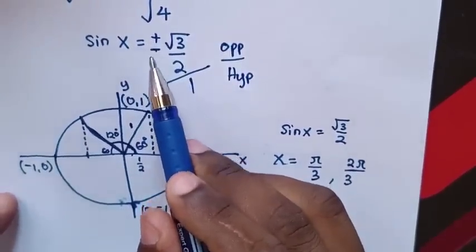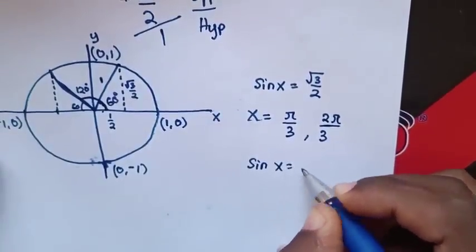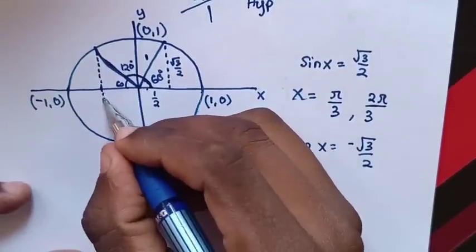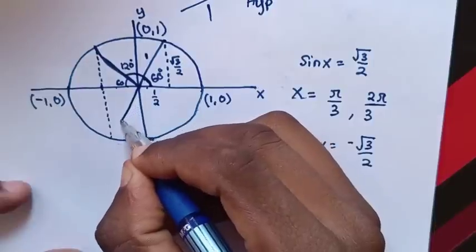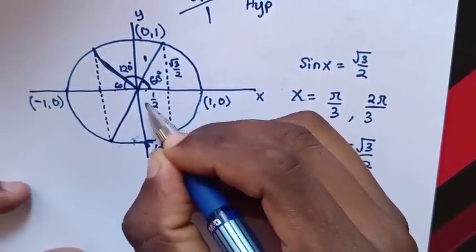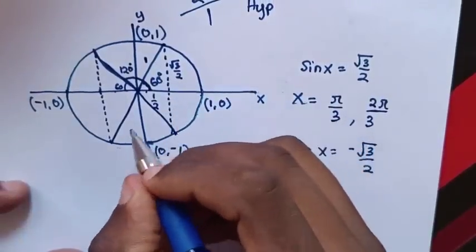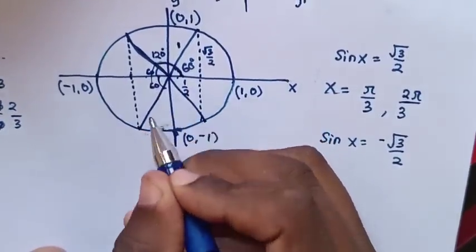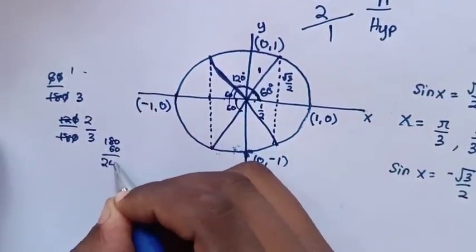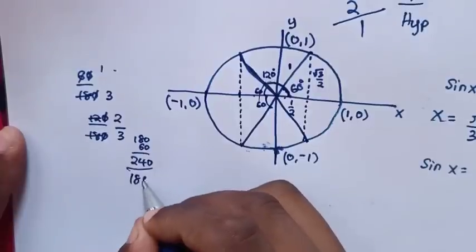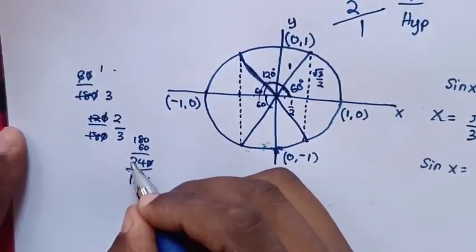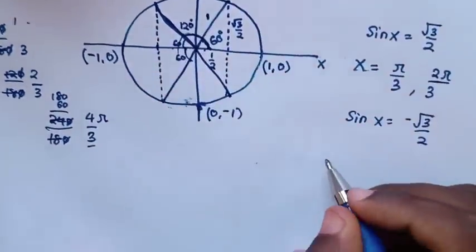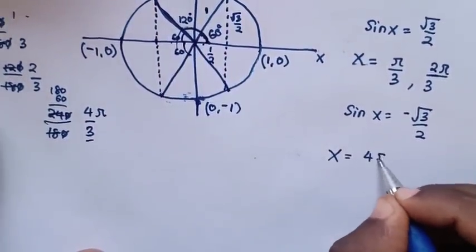To find the value of x when sin x is negative: from sin x equals negative square root of 3 over 2, the graph is below the x-axis. We draw the corresponding triangle in the opposite region. The angle is 60 degrees below the x-axis, so from 0 it is 180 plus 60, which is 240 degrees. Converting: 240 divided by 180 times pi simplifies to 4 over 3 times pi, giving x equals 4 pi over 3.